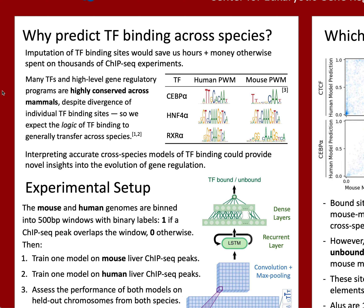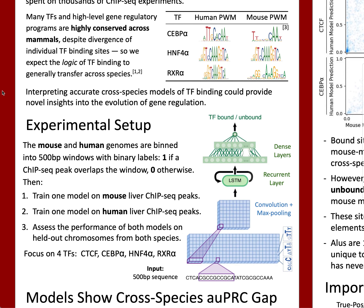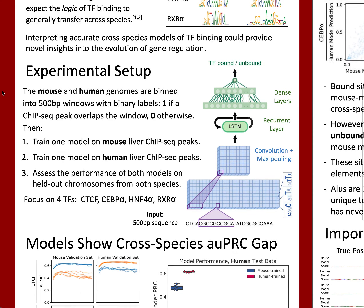To start off, we needed to know how well deep learning models designed to predict TF binding from sequence perform across species. We binned the human and mouse genomes into 500 base pair bins and labeled each bin according to whether or not a ChIP-seq peak fell within it. Then for a given TF, we trained one model to predict binding from mouse liver ChIP-seq data and one model to predict binding from human liver ChIP-seq data. Finally, we asked how well these models performed both within and across species.